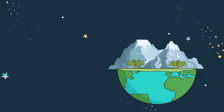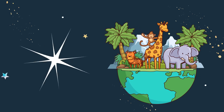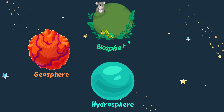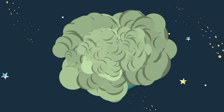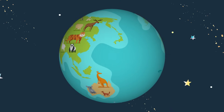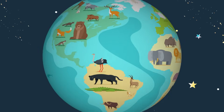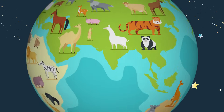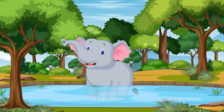Welcome boys and girls. Today we're going to talk about the four spheres: the geosphere, the hydrosphere, the biosphere, and the atmosphere. We will learn how these four spheres interact with each other and shape the natural world as we know it. And to help us identify the four spheres, let's bring in our friend Ellie the Elephant. Hi friends, welcome to my watering hole.